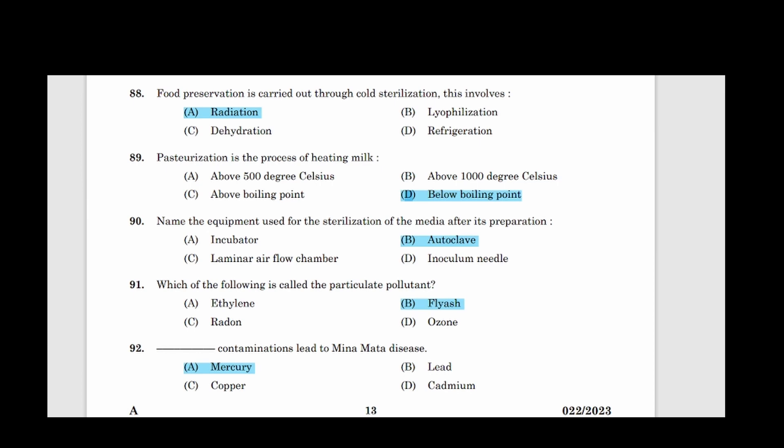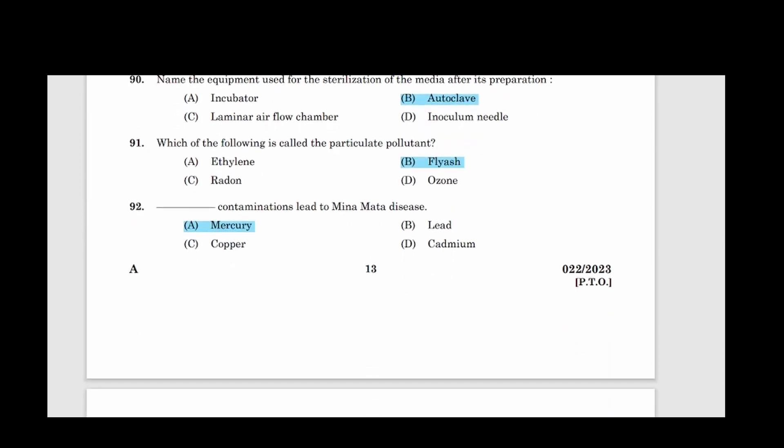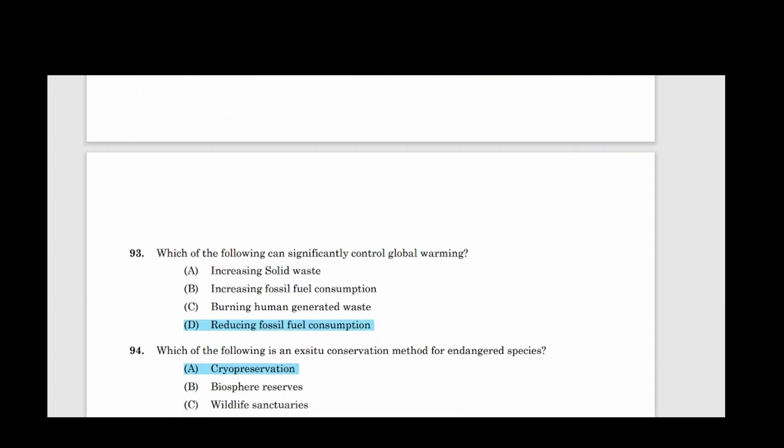90: Name the equipment used for the sterilization of the media after its preparation. Answer option B, Autoclave. 91: Which of the following is called the particulate pollutant? Answer option B, Fly ash. 92: Dash contamination leads to Minamata disease. Correct answer option A, Mercury. 93: Which of the following can significantly control global warming? Answer option D, Reducing fossil fuel consumption.